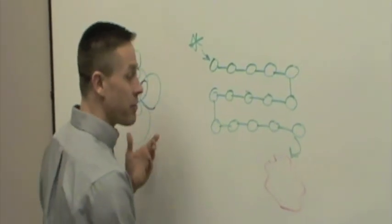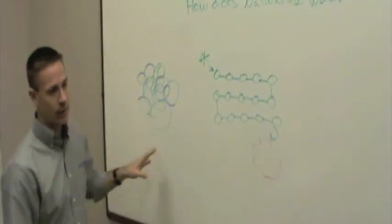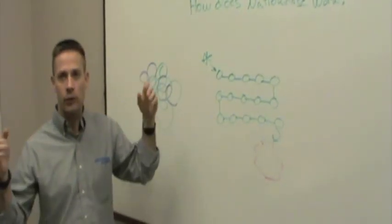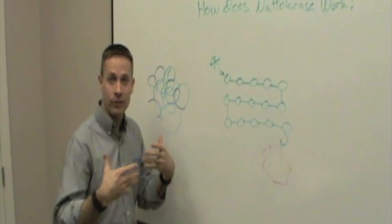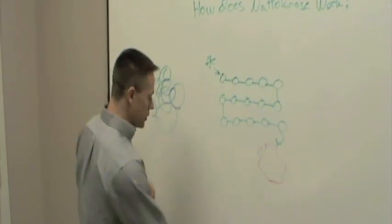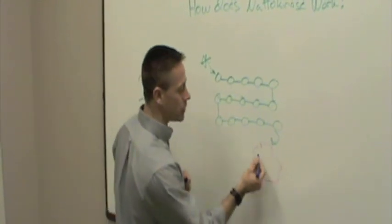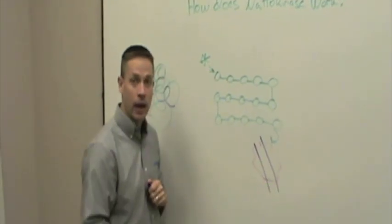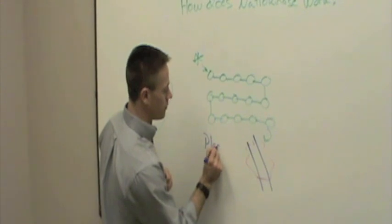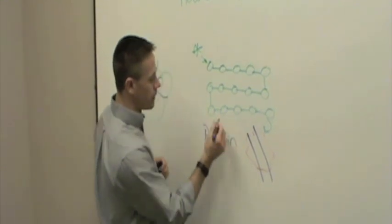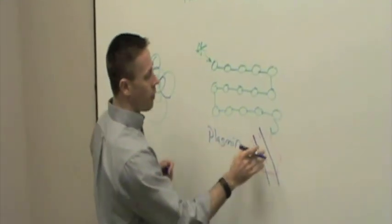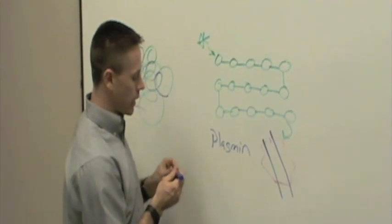Now, out of the tens of thousands of enzymes that work in the body and help us to stay alive at all times, there is only one enzyme in your body that your body makes that will actually dissolve this blood clot. And that's called plasmin. Plasmin is the only proteolytic enzyme of your body that dissolves blood clots.